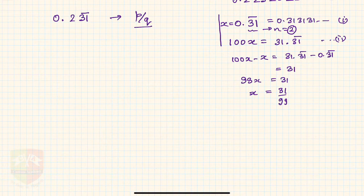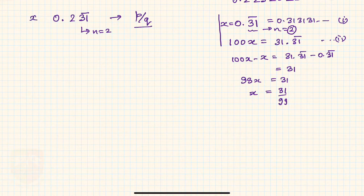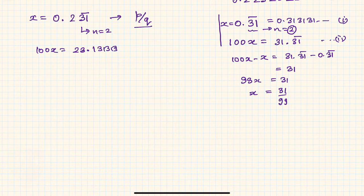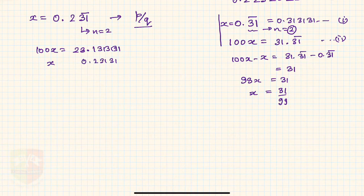In this case you can't really multiply by 100. Here n equals 2 — two digits are getting repeated. But if you multiply this x by 100, you get 100x equals 23.131313 and so on. If you then try to subtract 100x minus x, with x being 0.2313131, it will be very difficult to subtract these two. So it will not work.